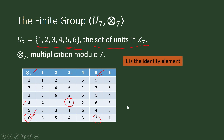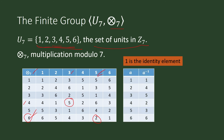The identity element under multiplication modulo 7 is 1. The inverse of 2 is 4, and the inverse of 3 is 5, because when you divide the product of 3 and 5 by 7 the remainder is 1.